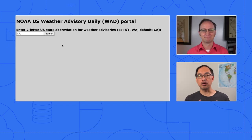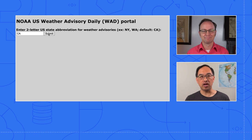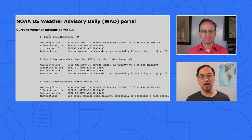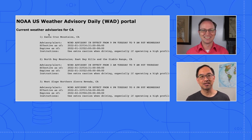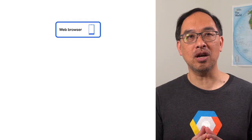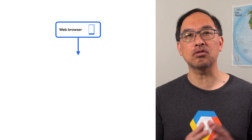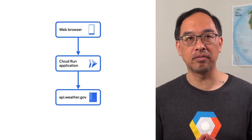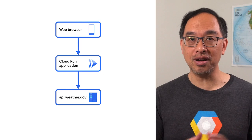All right, Wes. Could you walk us through your weather alerting app? Yes, of course. When I enter a US state abbreviation in this text field, the app hits api.weather.gov to get the weather alerts for that state and then displays them to the user. It's a web app, and I didn't want to maintain any servers or virtual machines, so I deployed it to Cloud Run. It's running pretty well.